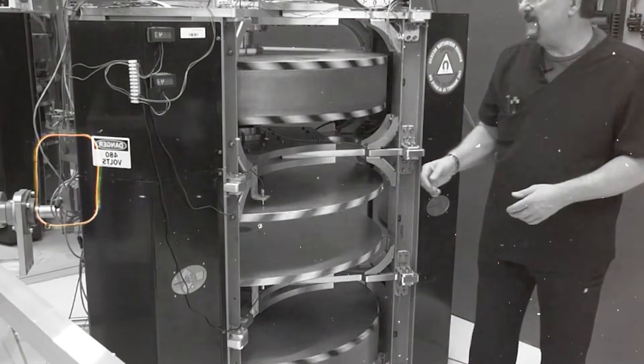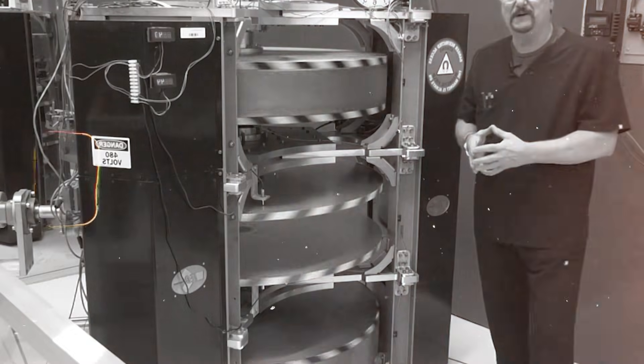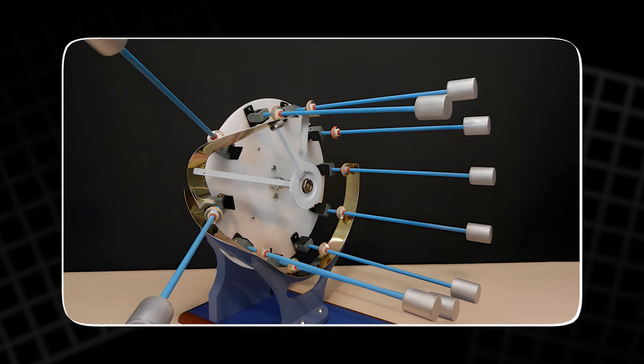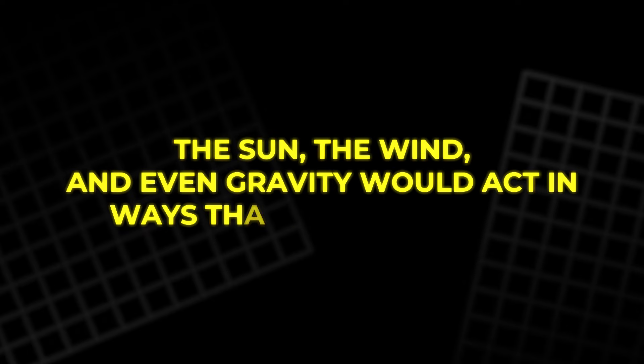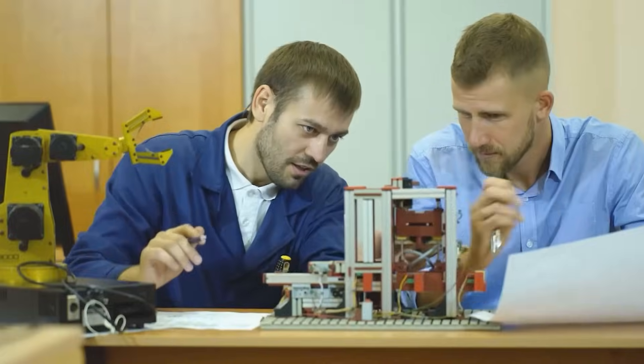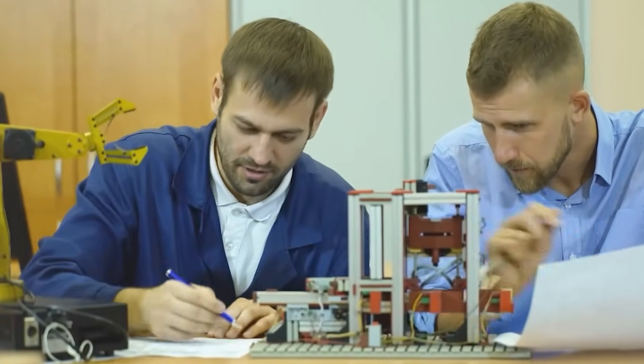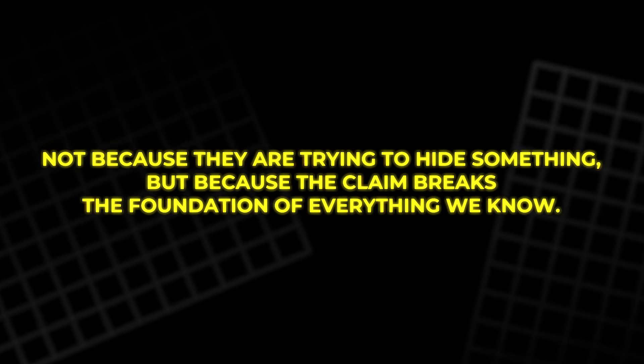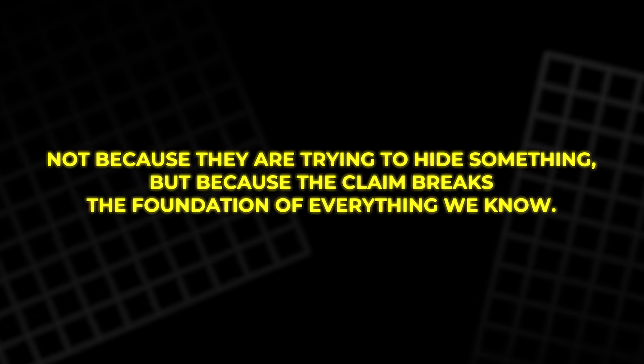If perpetual motion were real, engines would last forever. Batteries would never drain. Even nature itself would behave differently. The sun, the wind, and even gravity would act in ways that make no sense. That is why scientists reject the idea instantly. Not because they are trying to hide something, but because the claim breaks the foundation of everything we know.